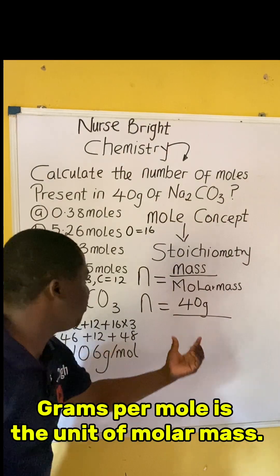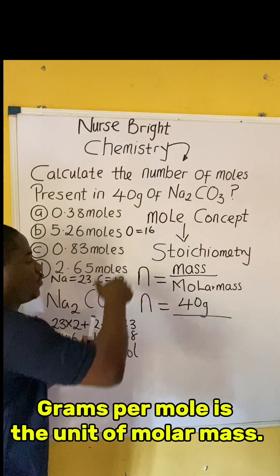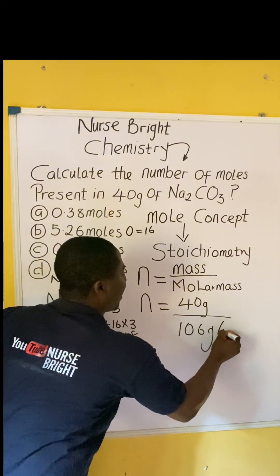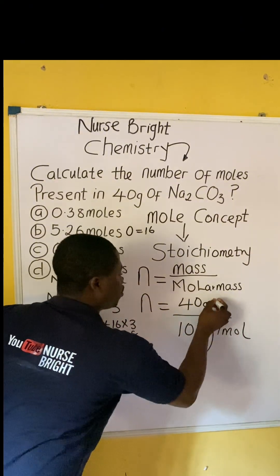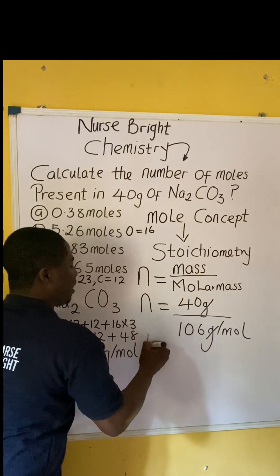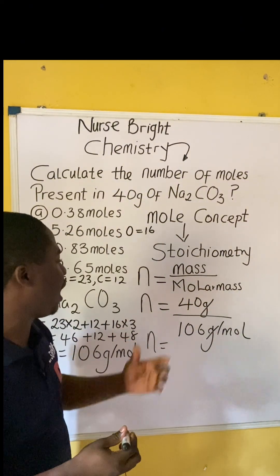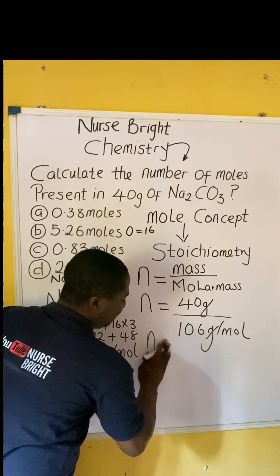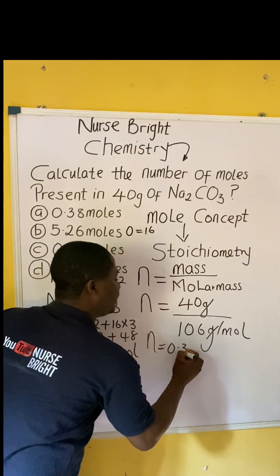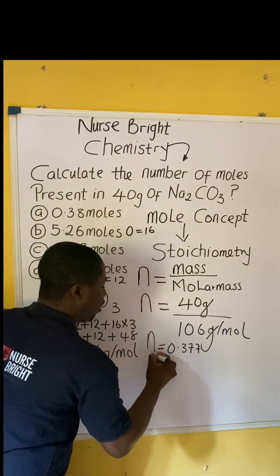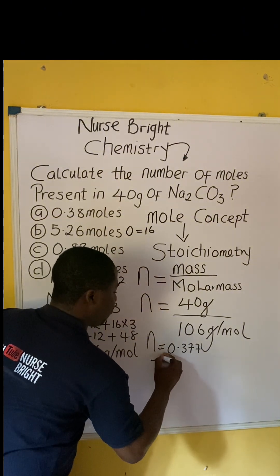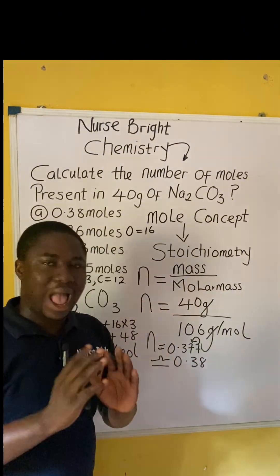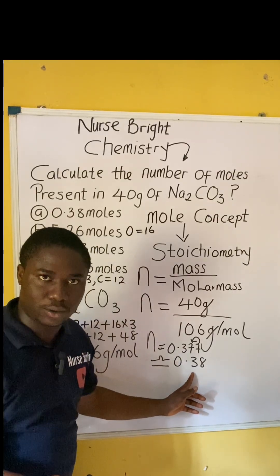So 106 grams per mole is what we input for the molar mass of the compound. Grams cancels grams. The number of moles is 40 divided by 106, which gives about 0.377. When we approximate, it becomes 0.38.